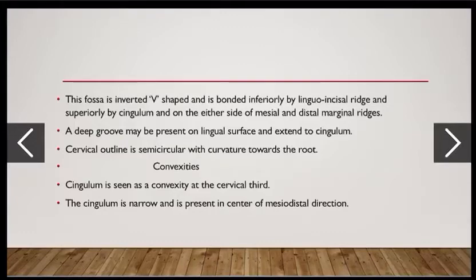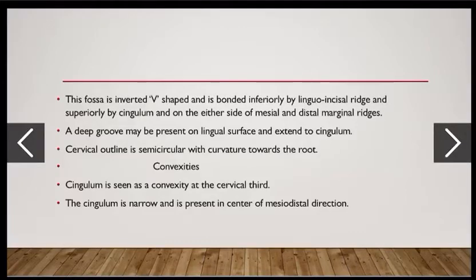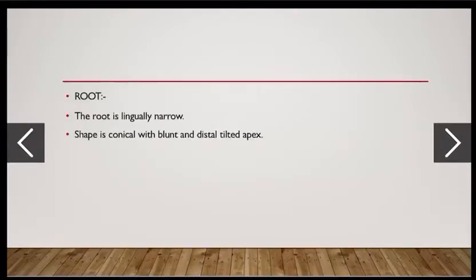Lingual aspect convexities: the cingulum is seen as a convexity at the cervical third. It is narrow and present in the center of the mesiodistal direction. Root: the root is lingually narrow with a conical shape and a blunt, distally tilted apex.